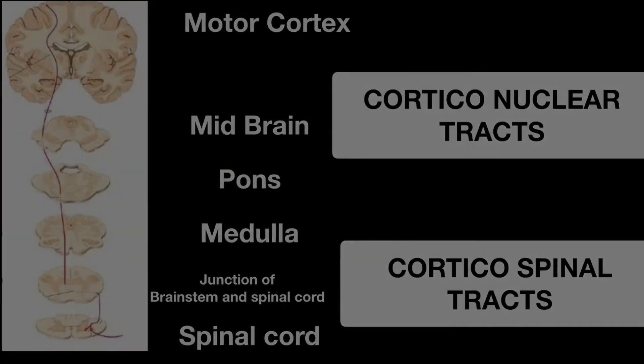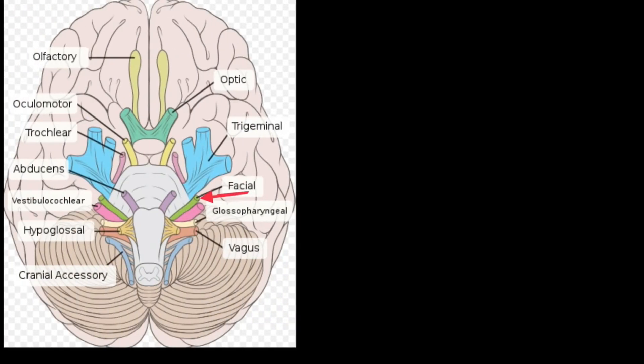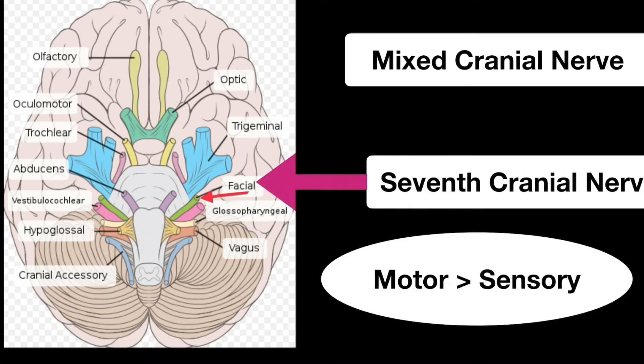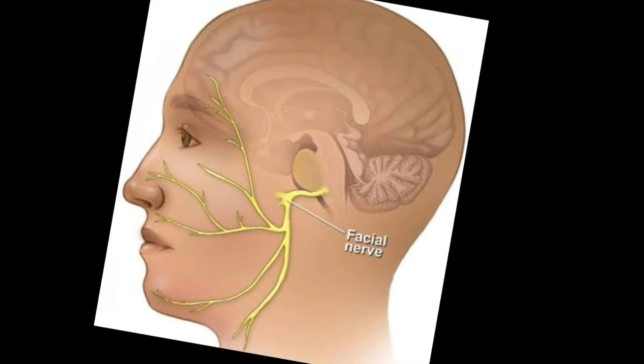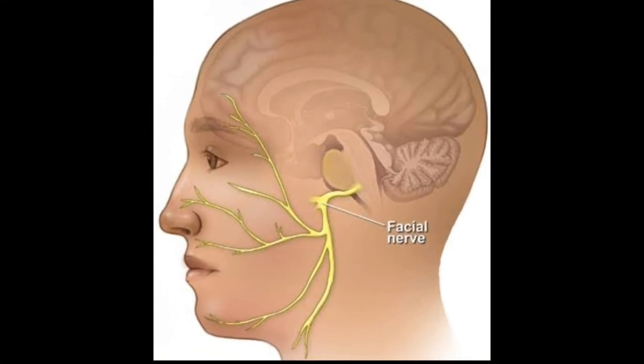Let us see the facial nerve. It is the seventh cranial nerve. It is a mixed nerve containing both motor and sensory component and also a small parasympathetic component. This facial nerve has nuclei in lower pons.